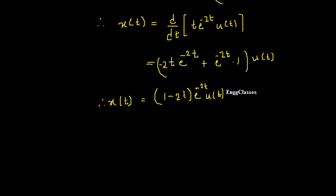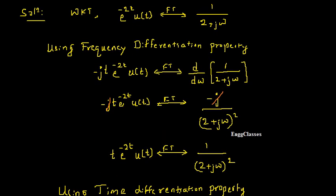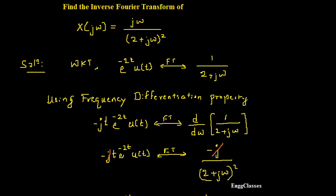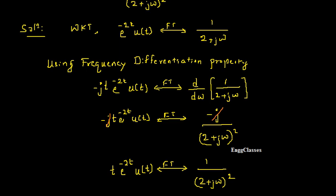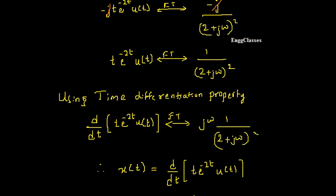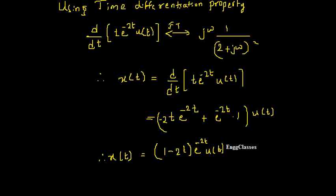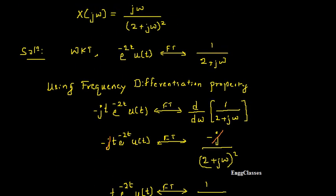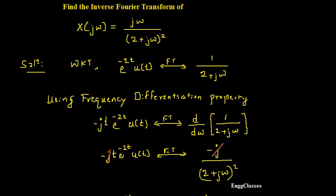So this is how we find the inverse Fourier transform. The very important things to remember in this problem are the frequency differentiation property and the time differentiation property — making use of both properties allows us to get the answer very easily. I hope you have understood. If there are any doubts, please let me know in the comment section. Subscribe to NG Classes for more videos on signals and systems. Thank you everyone for watching.